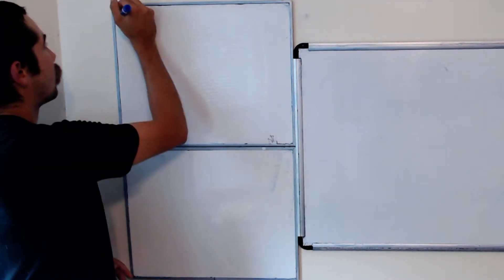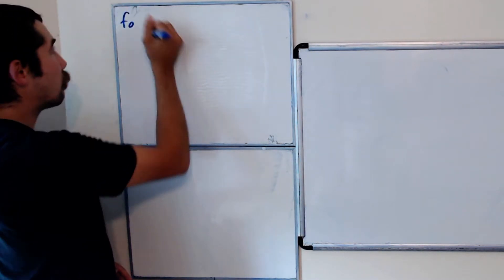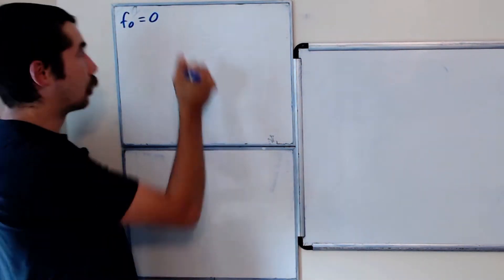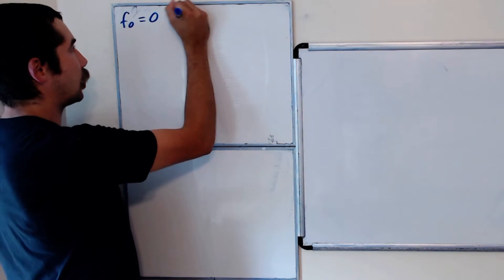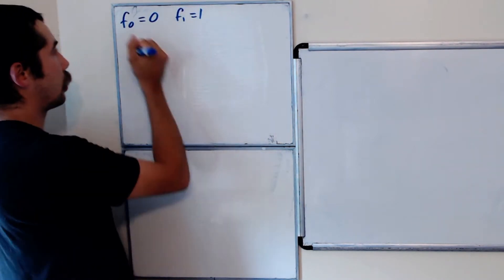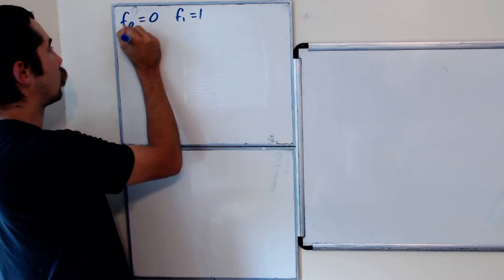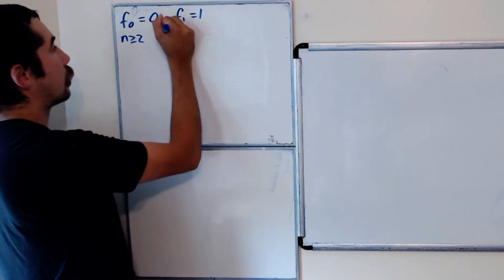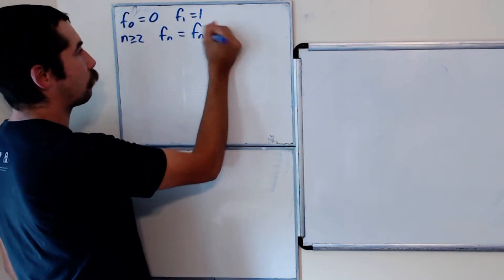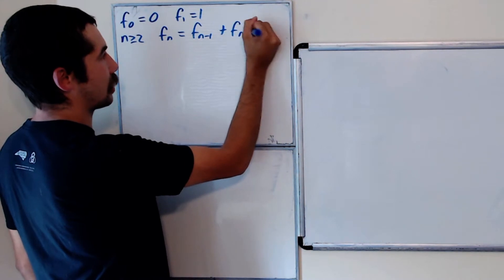So what are the Fibonacci numbers? The 0th Fibonacci number is 0, the first Fibonacci number is 1, and then for n greater than or equal to 2, the nth Fibonacci is equal to the (n minus 1)st plus the (n minus 2)nd.